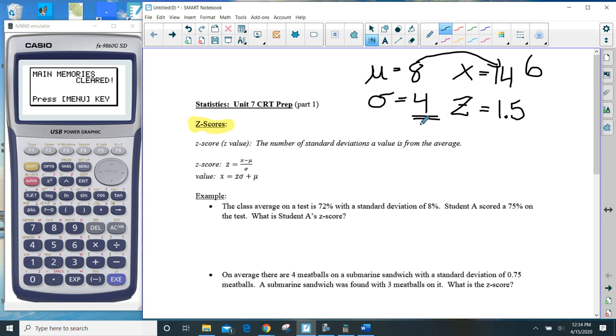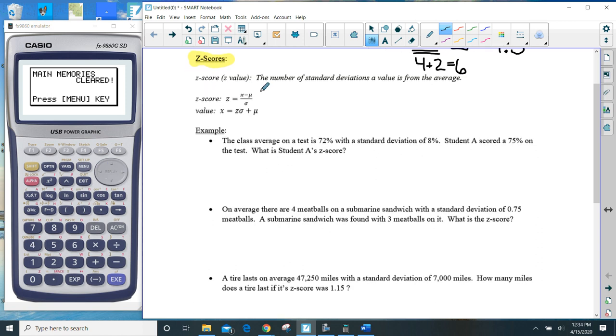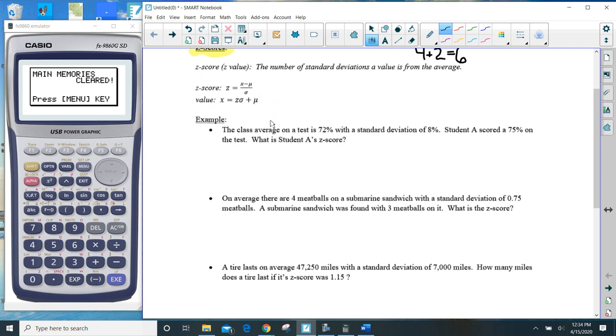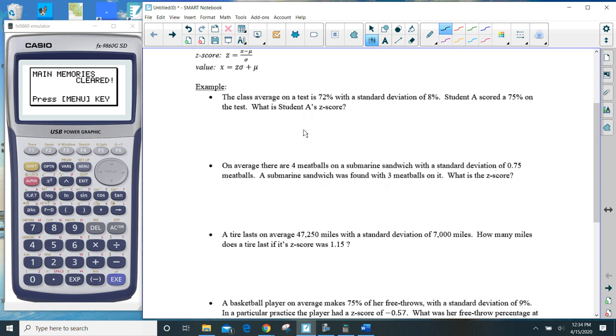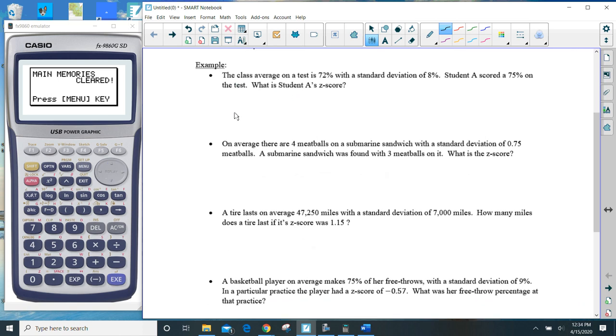So 1½ of these, so 4 times 1½ is 6. So I see that this value of 14 would have a Z-score of 1½ because the value, 14, is 1½ standard deviations away from the average, 8. And this sort of concept is covered right here in these two formulas right here. So let's go ahead and get started and see what we can cover with these four examples here.